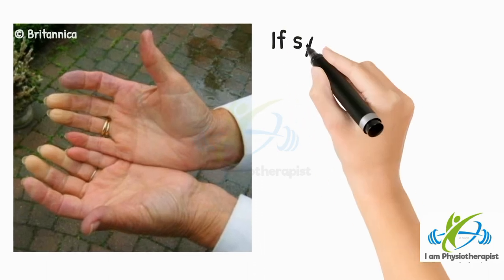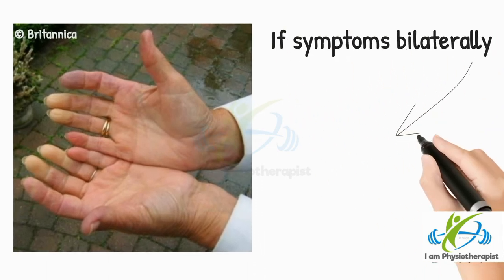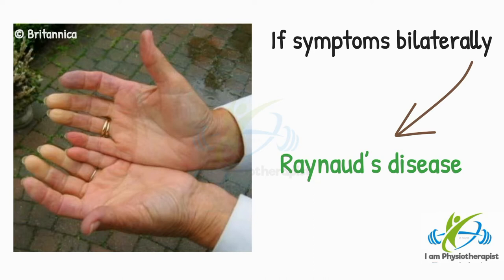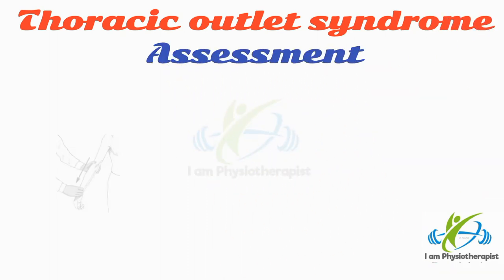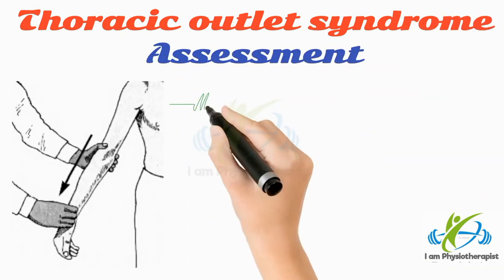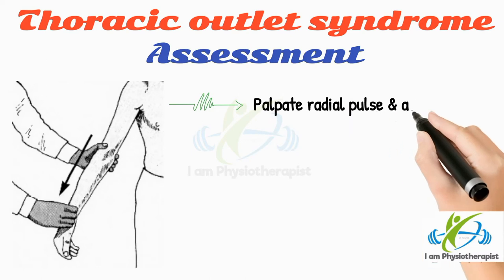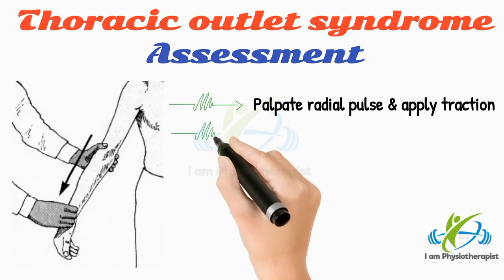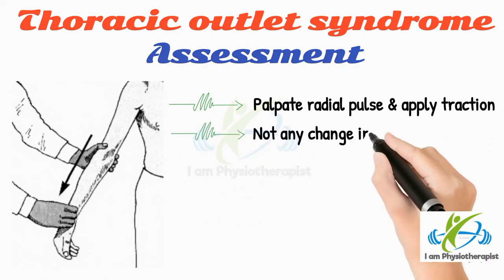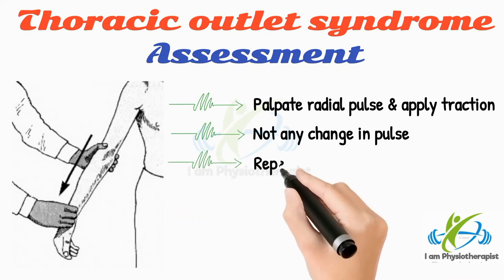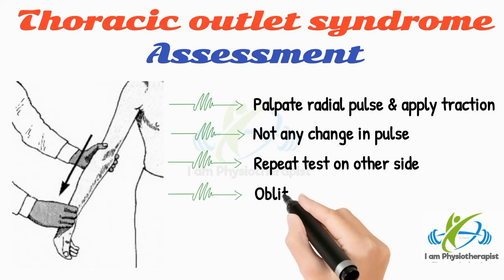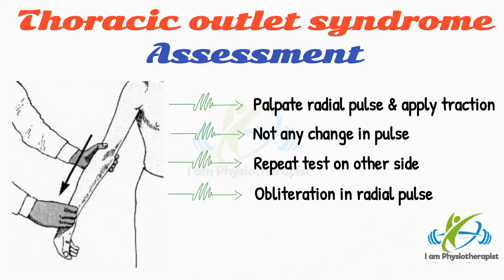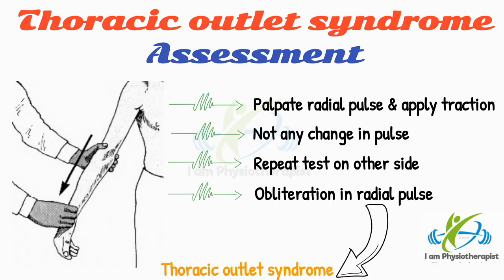If symptoms are present bilaterally, it is more suggestive of Raynaud's disease. For the assessment of thoracic outlet syndrome, palpate the radial pulse and apply traction to the arm. Note any change in pulse, and repeat the test on the other side. Any obliteration of the radial pulse is suggestive of thoracic outlet syndrome.